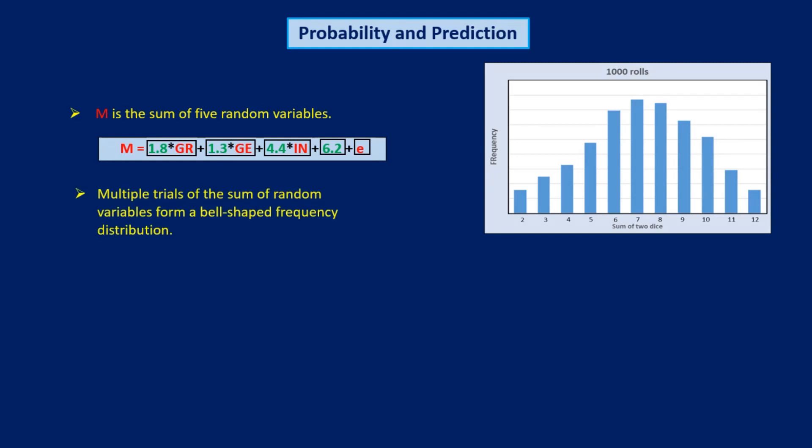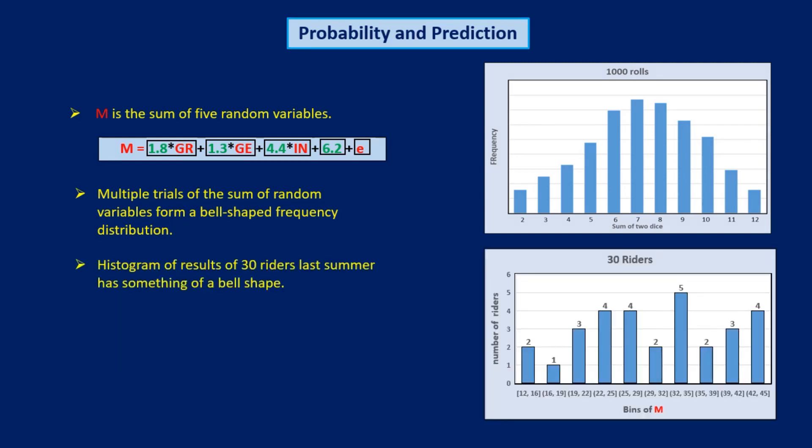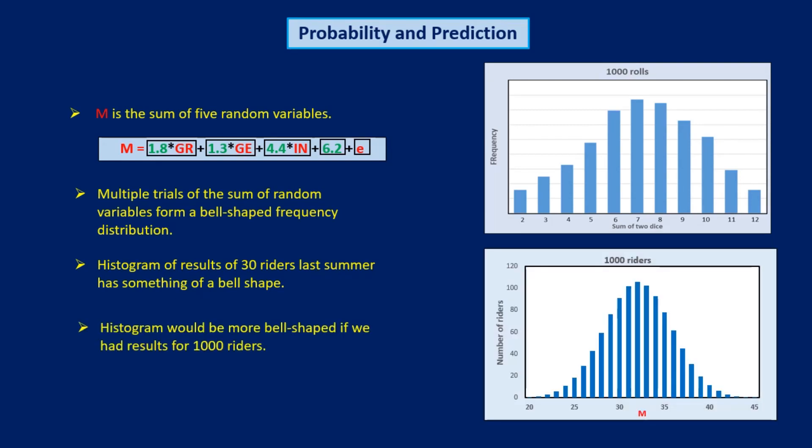And finally, I pointed out that the histogram, or frequency distribution, of m for the 30 riders last summer has something of a bell shape, because m is the sum of five random variables. And with more riders, the histogram would be even more bell-shaped. The fact that m is a normally distributed random variable allows us to predict rider performance in next summer's Raleigh. Today, we'll calculate the probability that Gina, who trains with the apples, will ride more than 35 miles.